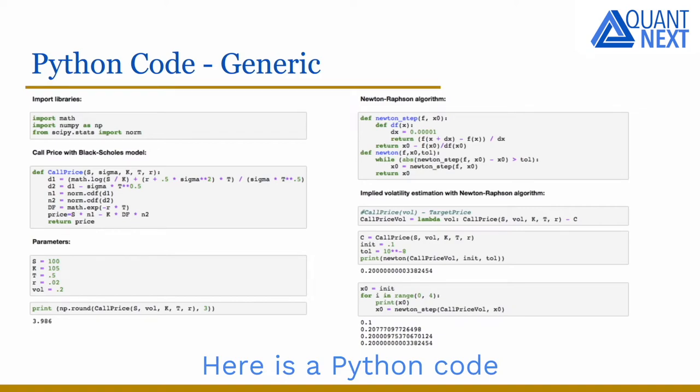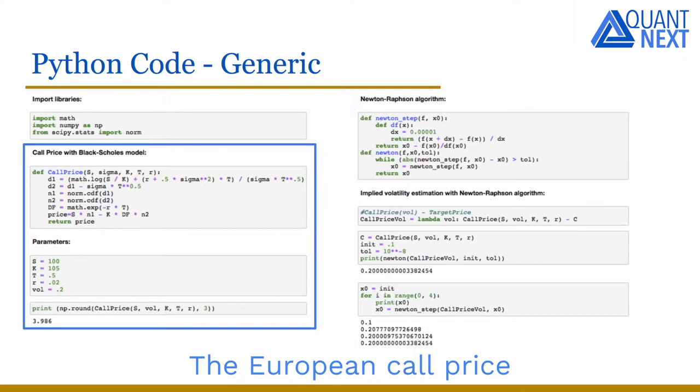Here is a Python code with a generic Newton-Raphson algorithm. The European call price is determined by the Black-Scholes formula.